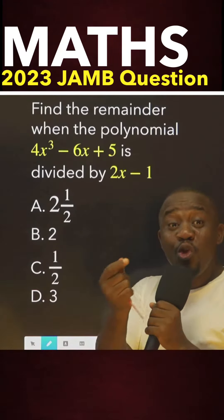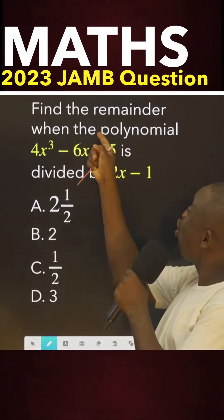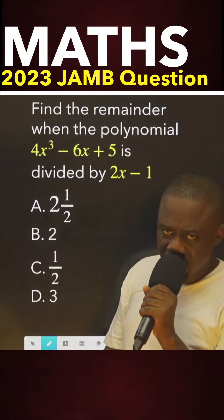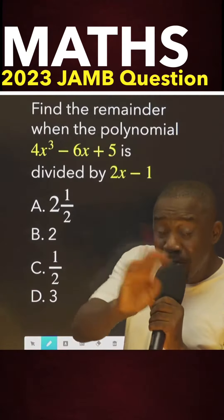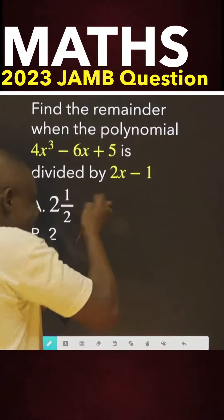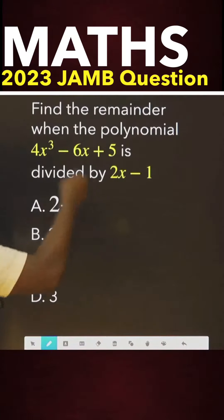Come, come, come. You want to write JAMB, you don't know remainder theorem? Why? Now that means you are prepared to fail. Let me show you, very simple. This is bonus. They are telling you to find